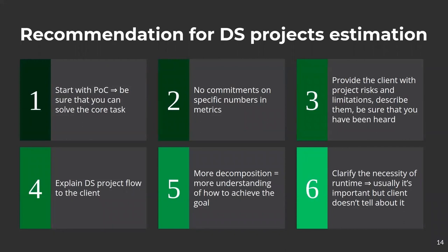Second recommendation: no commitment to specific numbers in metrics. I know clients sometimes ask you to promise 95% accuracy — don't do this. You don't know results in advance. If a client really insists on specific numbers, you can select several models you're going to try, look at the metrics these models achieved on open-source datasets, and share those numbers with the client — while being clear that you haven't tried them on their data yet.